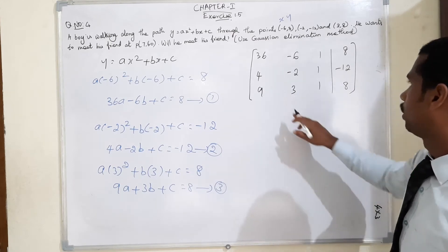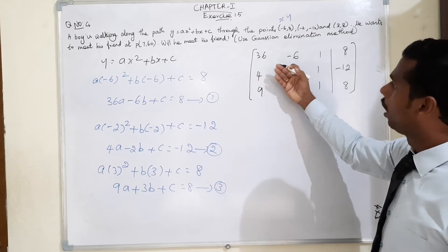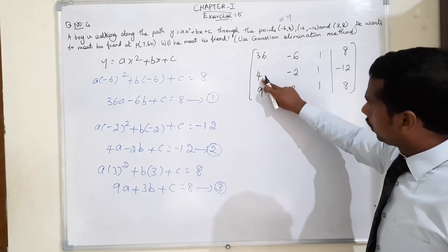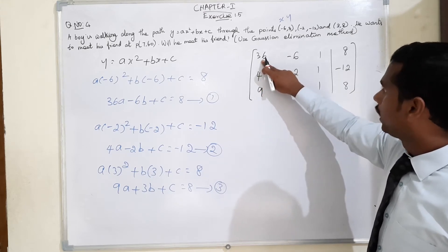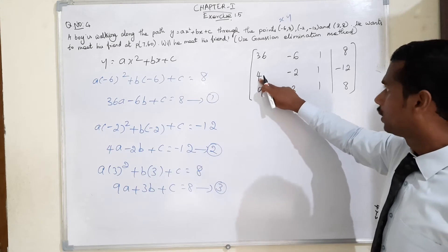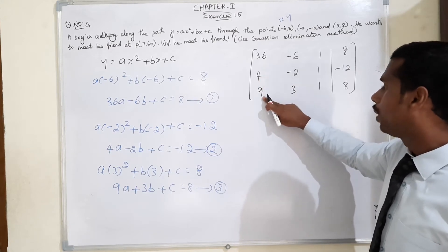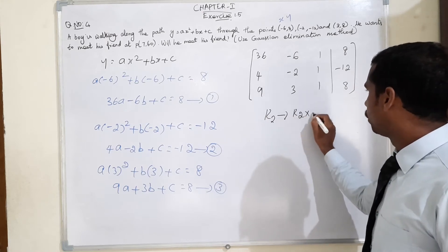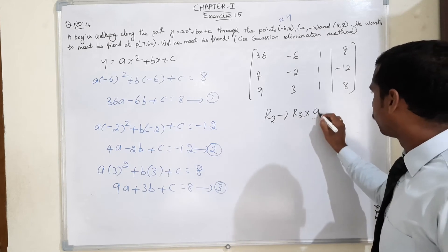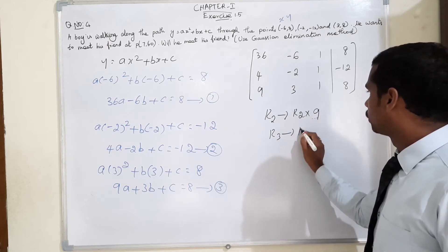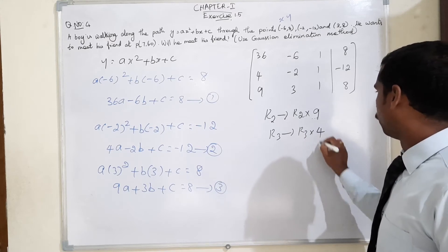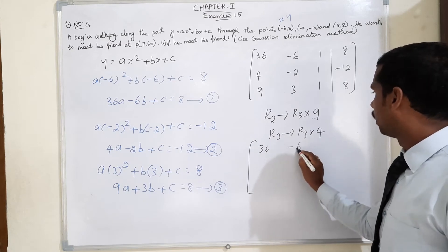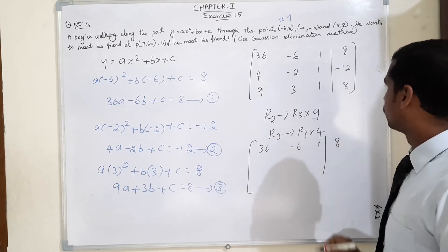Now listen my dear friends. In augmented form, when starting the non-zero digit, the first row we should write 1. R1 as it is: 36, -6, 1 | 8. Next, R2 into 9 and R3 into 4.